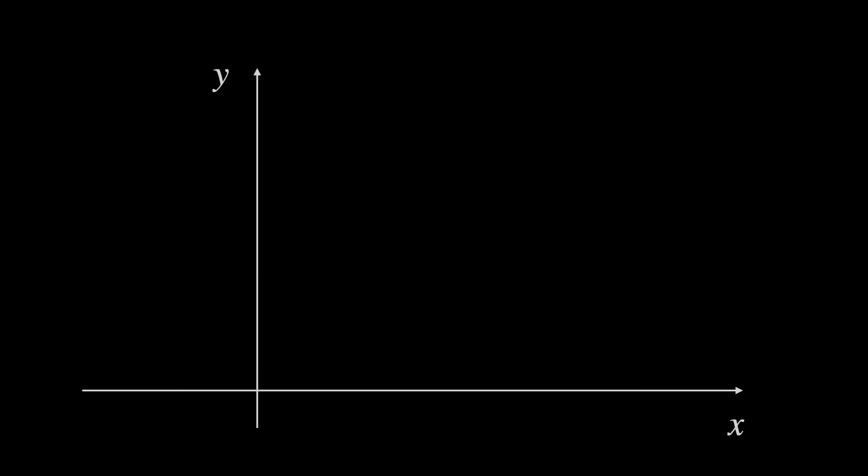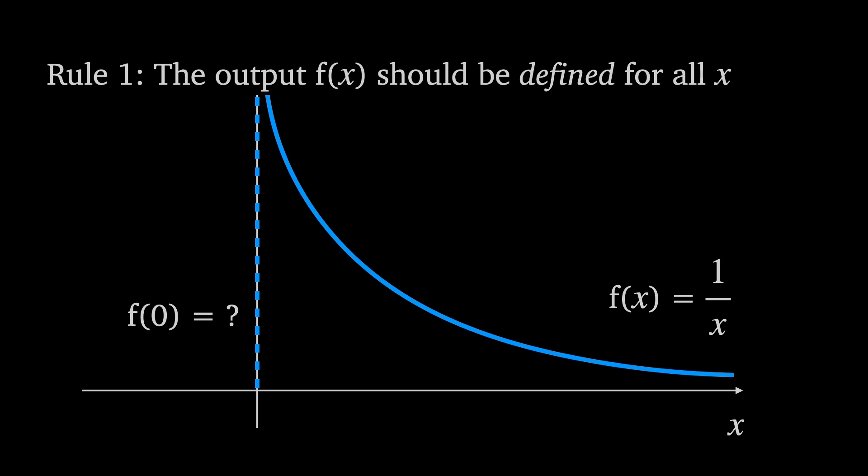There are a couple of issues a good definition of a function should address. For example, take f of x equals 1 over x. The problem here is that for x equals 0, the function isn't defined. So let rule 1 be that the output of a function should be defined for all inputs.